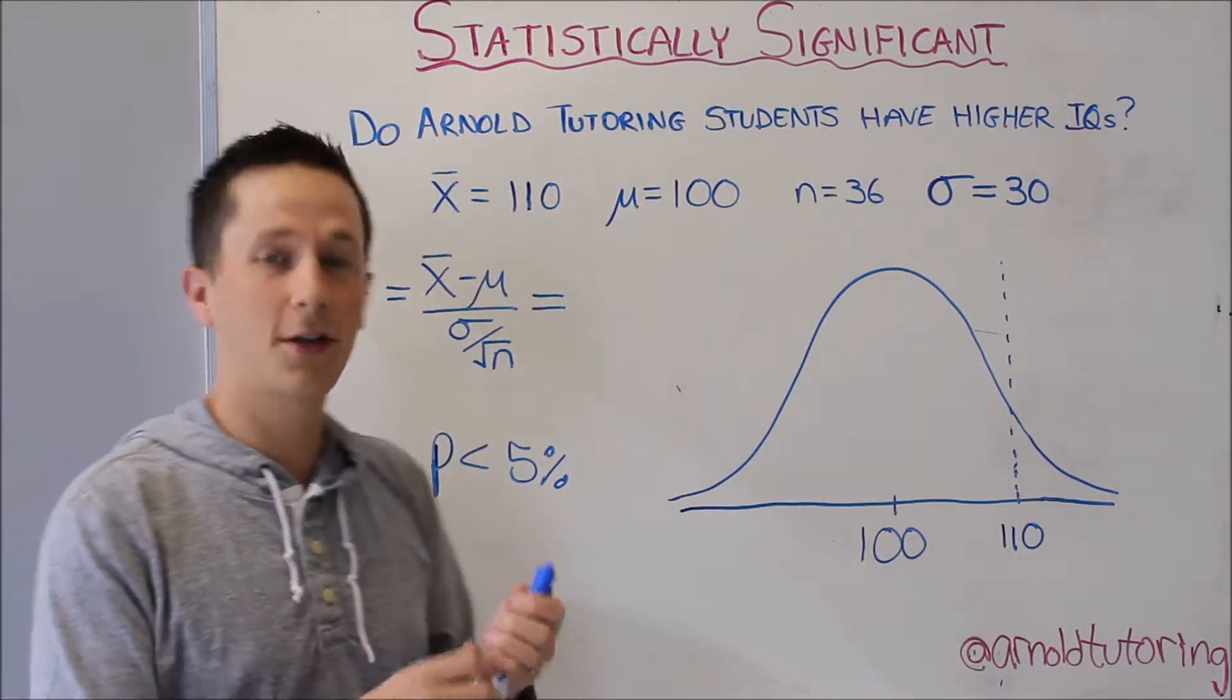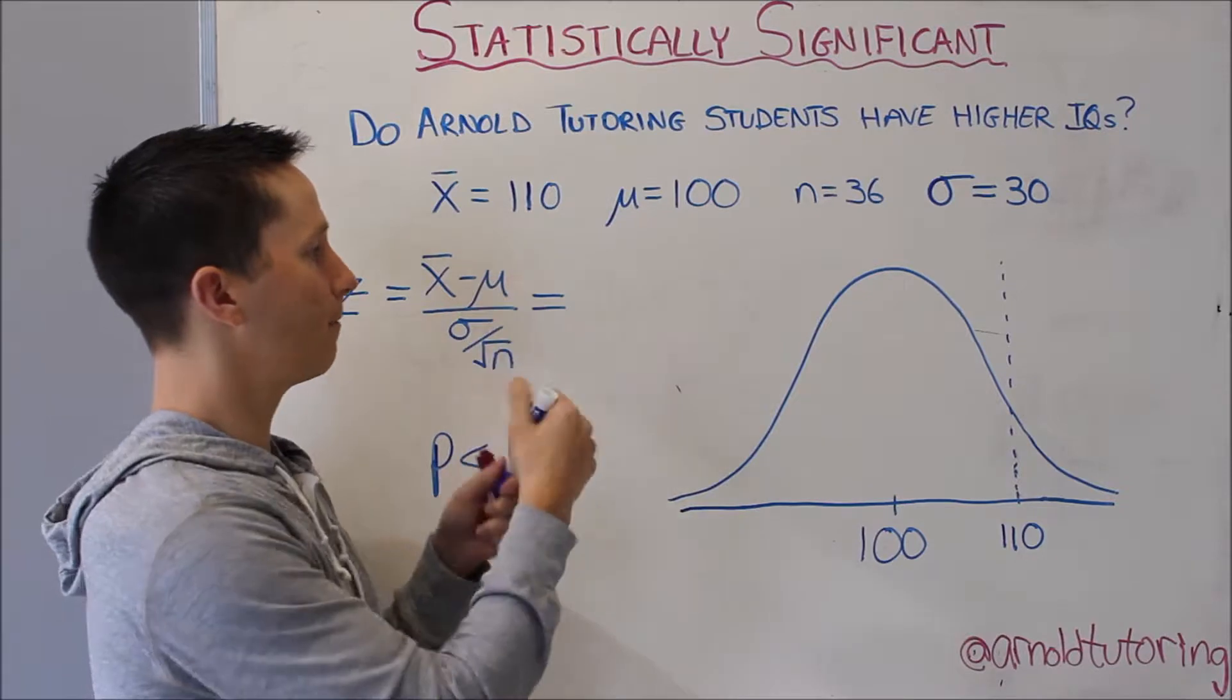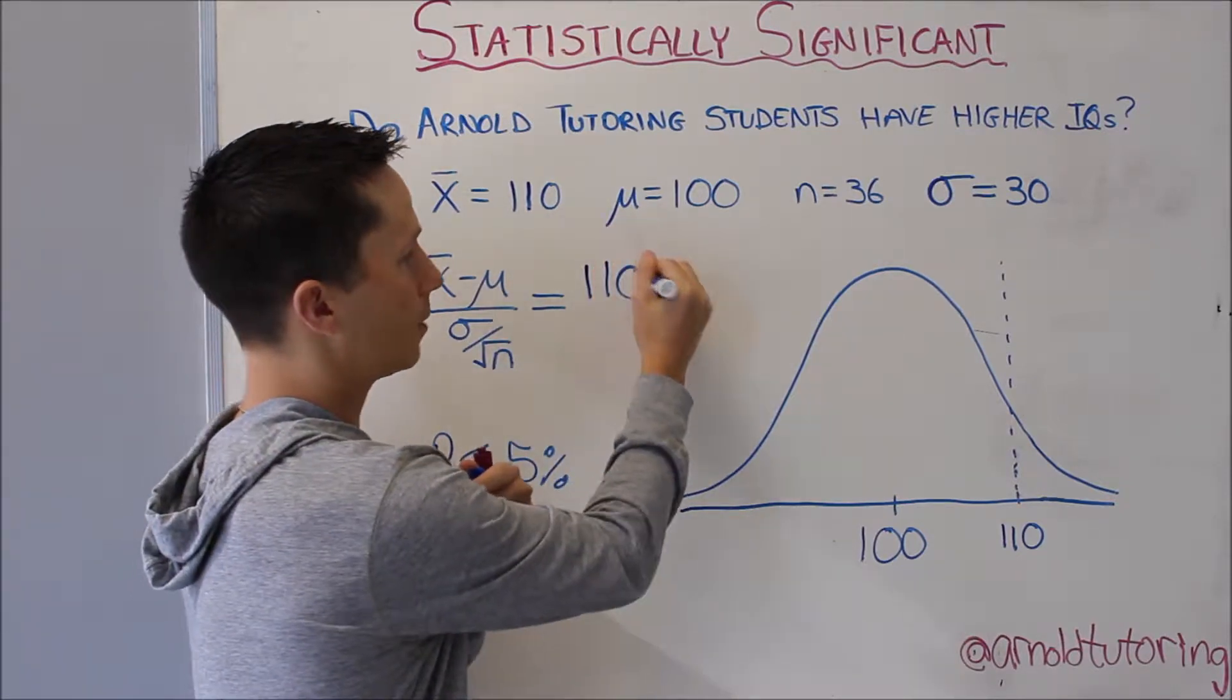What we're going to do, assuming these are normally distributed, is we're going to look at the difference between those means, so 110 minus 100.